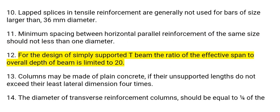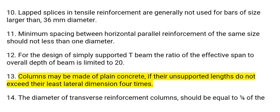12. For the design of simply supported T-beam, the ratio of the effective span to overall depth of beam is limited to 20. 13. Columns may be made of plain concrete if their unsupported lengths do not exceed their least lateral dimension four times.